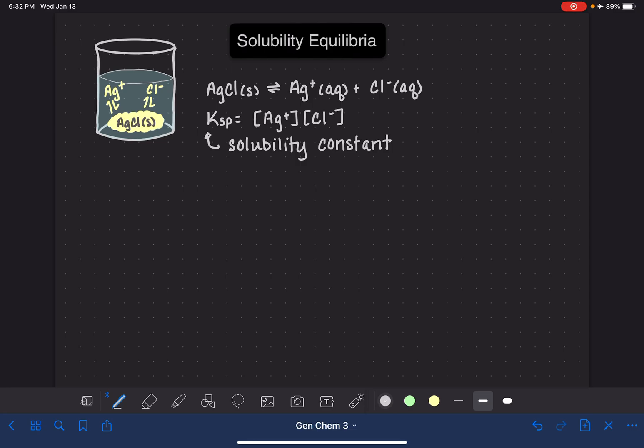In general, these KSP values are extremely small because there is only a very small amount of ions that are actually dissolving in solution. We can learn a lot about the solubility of a substance by taking a look at its KSP value.